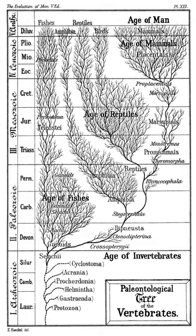The fossil record provides examples of transitional species that demonstrate ancestral links between past and present life forms. One such transitional fossil is Archaeopteryx, an ancient organism that had the distinct characteristics of a reptile, such as a long bony tail and conical teeth, yet also had characteristics of birds, such as feathers and a wishbone. The implication from such a find is that modern reptiles and birds arose from a common ancestor.